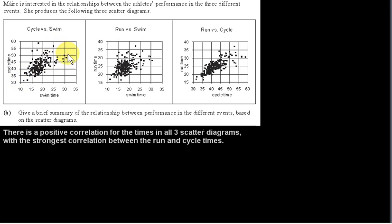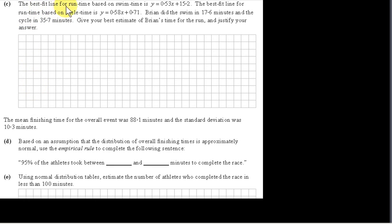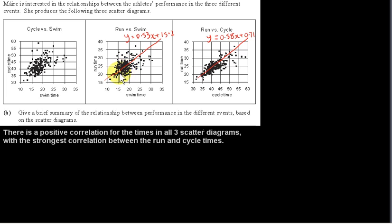Points at the bottom left of the scatter diagram represent times for the fittest people, and points at the top right represent times for the least fit people. The best fit line for run time based on swim time is y = 0.53x + 15.2. The best fit line for run time based on cycle time is y = 0.58x + 0.71.